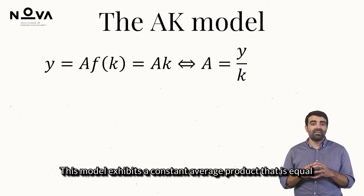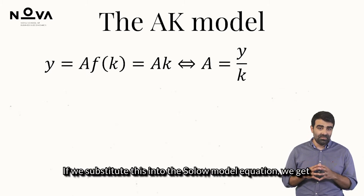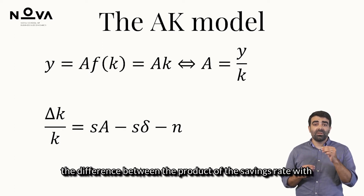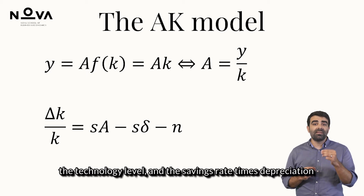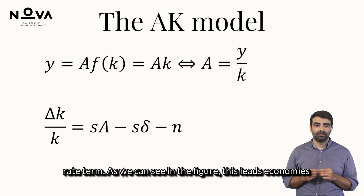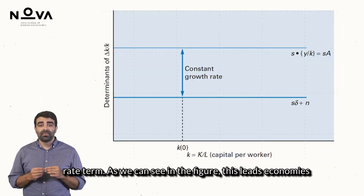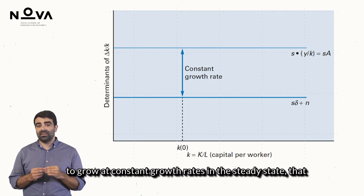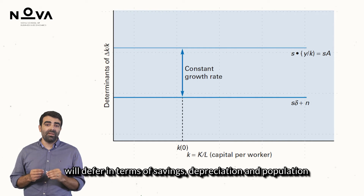This model exhibits a constant average product that is equal to the level of technology. If we substitute this into the Solow model equation, we get that the growth rate of capital per capita is now given by the difference between the product of the savings rate with the technology level, and the savings rate times the depreciation plus population growth rate term. As we can see in the figure, this leads economies to grow at a constant growth rate in the steady state, that will differ in terms of savings, depreciation, and population growth rate.